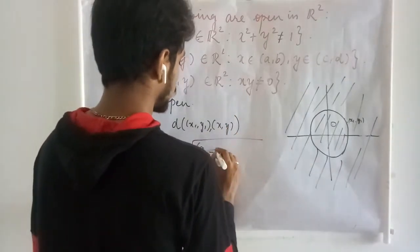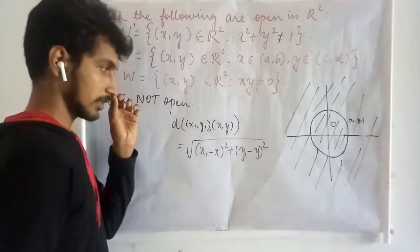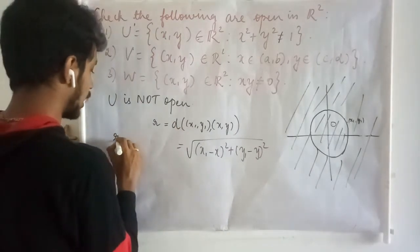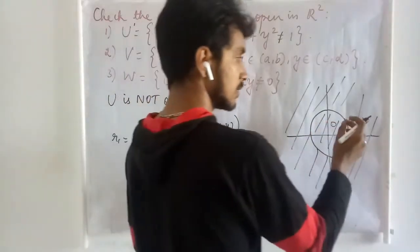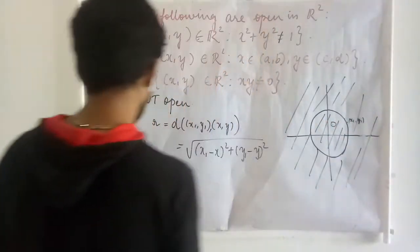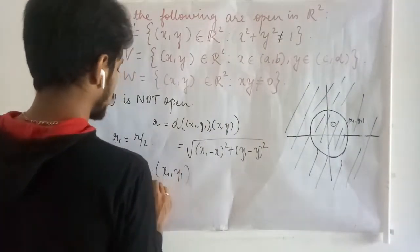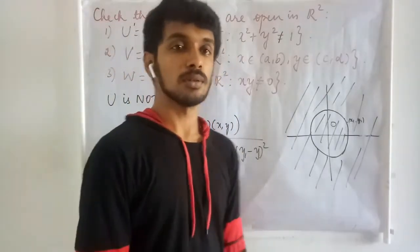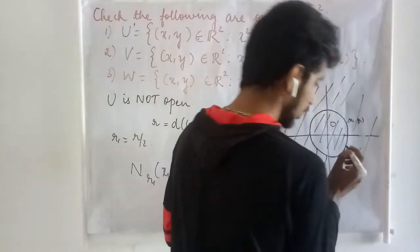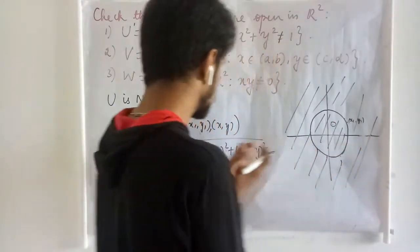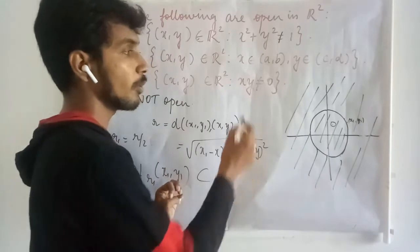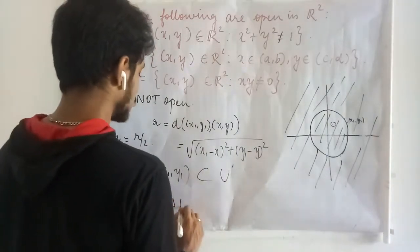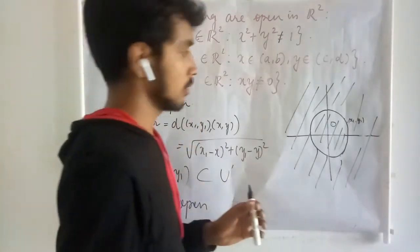The distance d of (x₁, y₁) from the boundary is √((x₁−x)² + (y₁−y)²). Let that value be r. I choose r₁ = r/2 and find the neighborhood of (x₁, y₁) with radius r₁. This neighborhood is contained in U'. Even very close to the boundary, I can always find such a radius. Therefore all points in U' are interior points and U' is open.